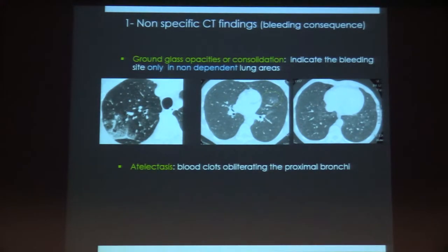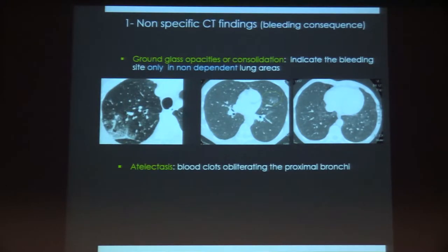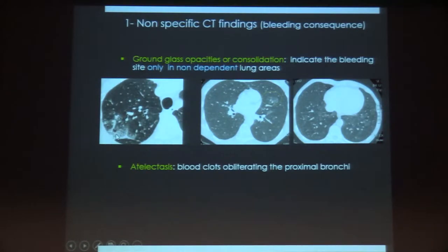On CT there are two categories of signs. The first category is non-specific CT findings — these are consequences of bleeding, not the cause. These anomalies include ground glass opacities or consolidation, depending on the amount of blood filling the alveolar spaces. They help localize the bleeding, but only in non-dependent lung areas. For example, ground glass in the right upper lobe suggests the bleeding comes from there, but ground glass in both lower lobes makes it impossible to lateralize.